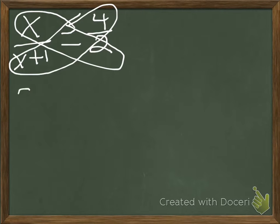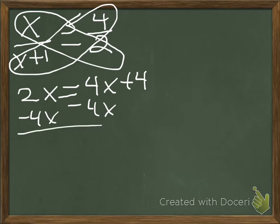Va a ser 2x igual a 4x más 4. Después tenemos que restar negativo 4 en los dos lados. 4 y negativo 4 se cancelan.